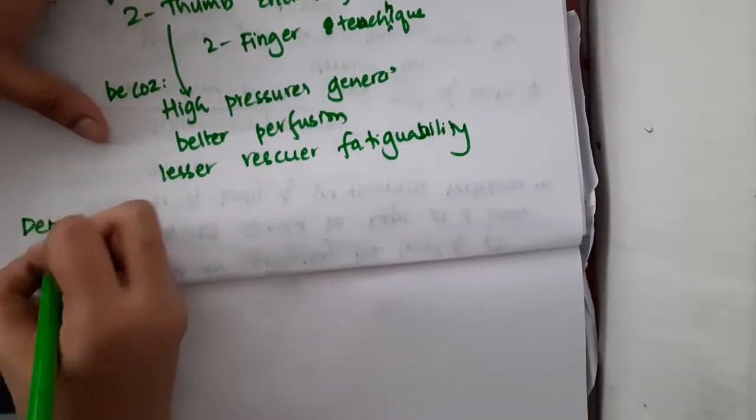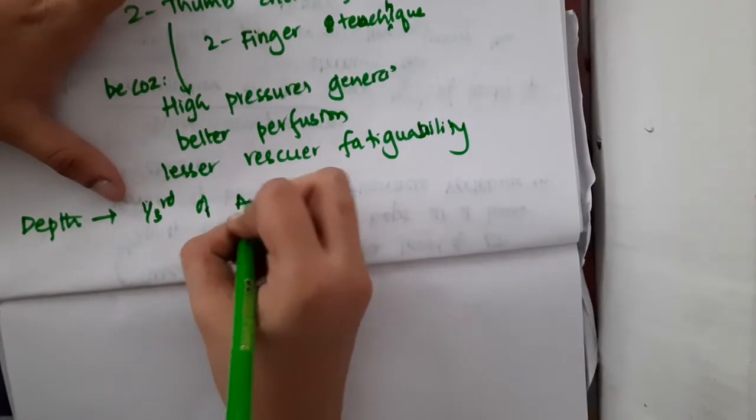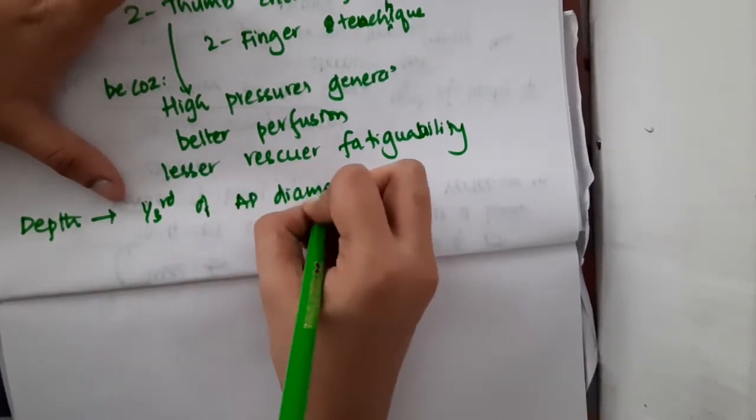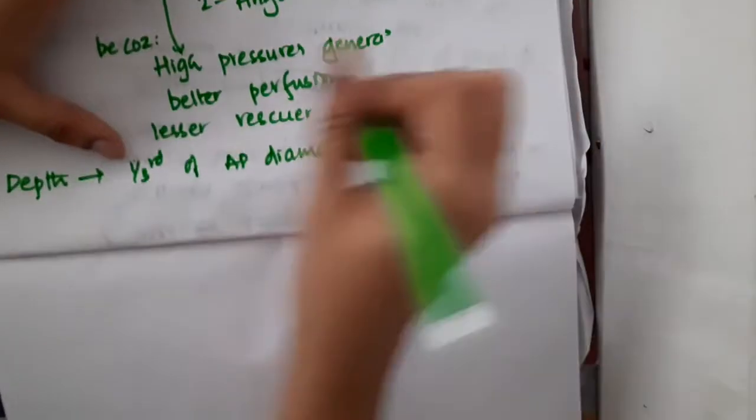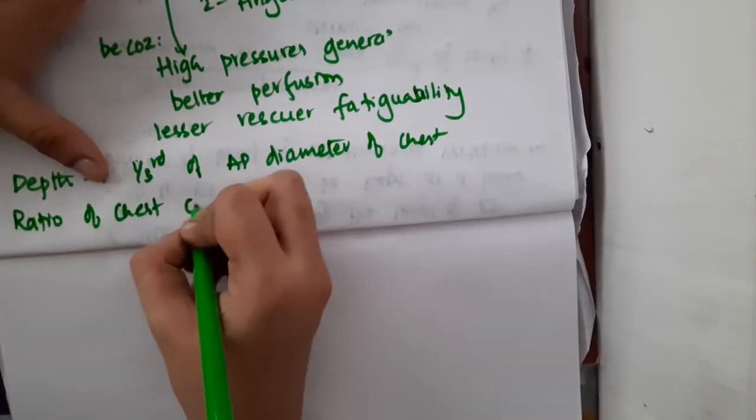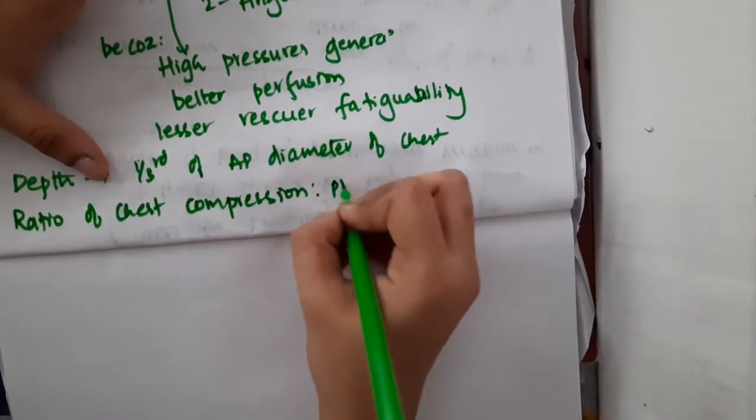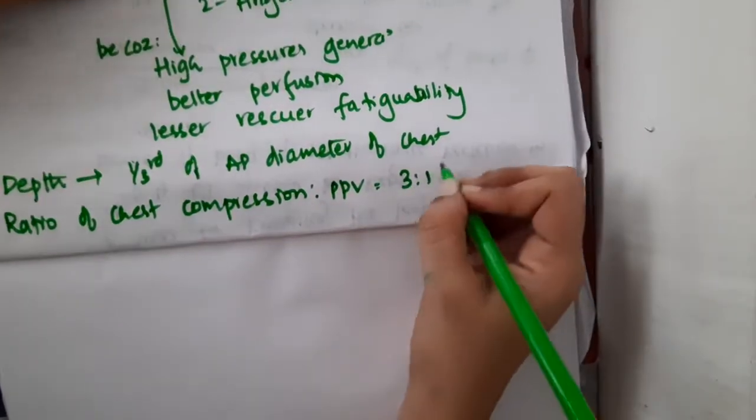What is the depth of the chest compression? It should be one-third of the anterior posterior diameter of the chest. What is the ratio of chest compressions to positive pressure ventilation which should be maintained? It is 3 to 1.